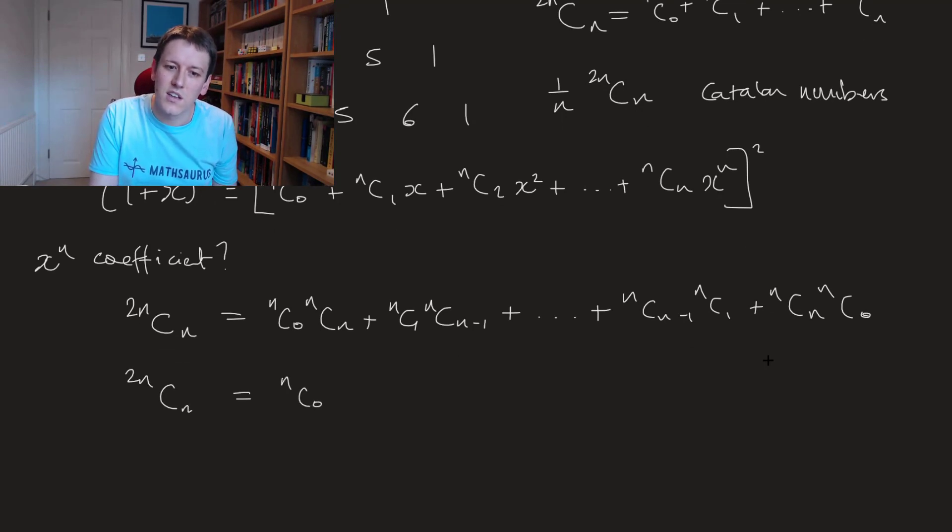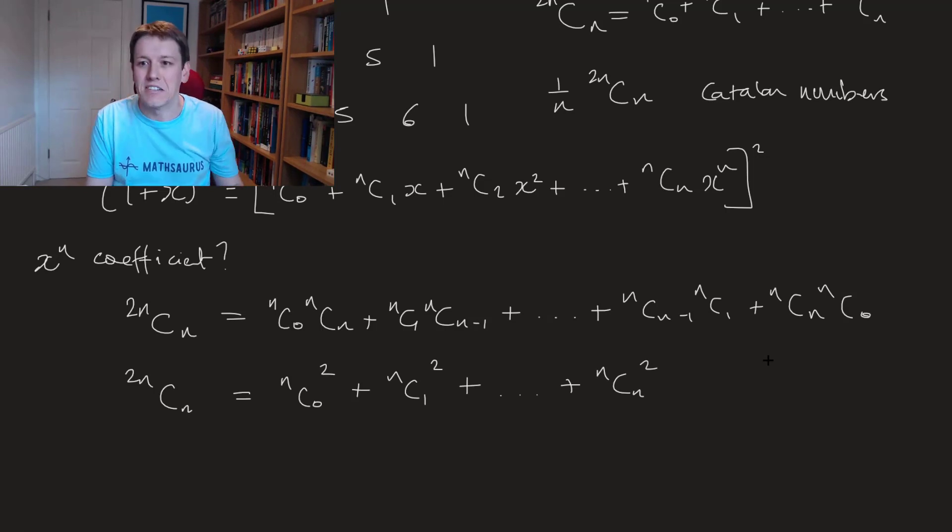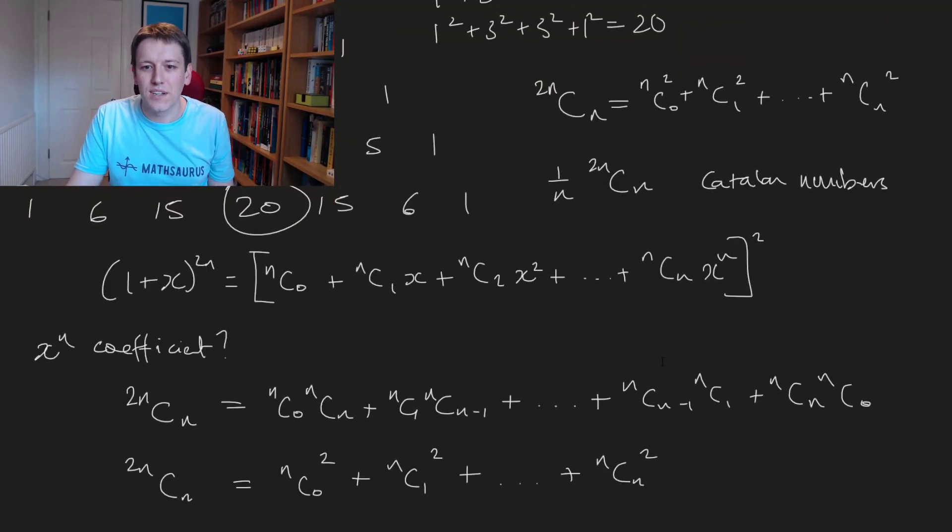So actually I can write this on the right hand side as just n choose 0 squared plus n choose 1 squared all the way up to n choose n squared and there we go what a brilliantly simple proof of that result.